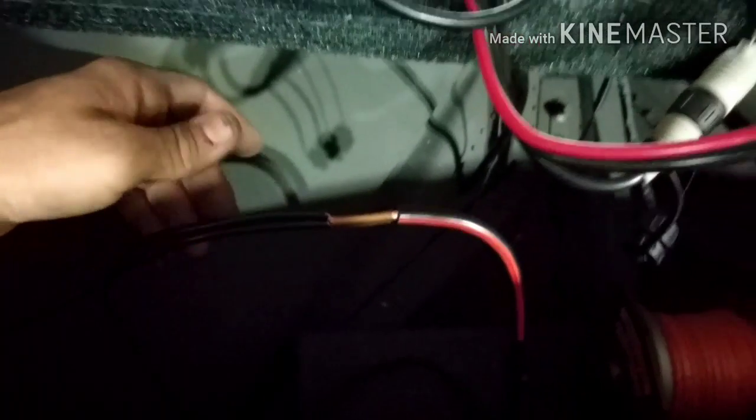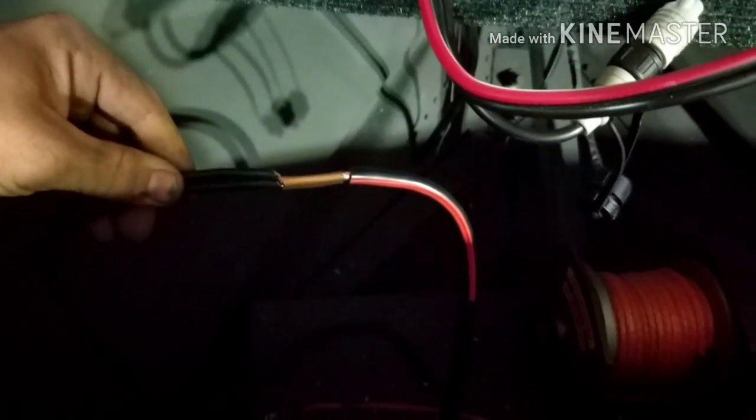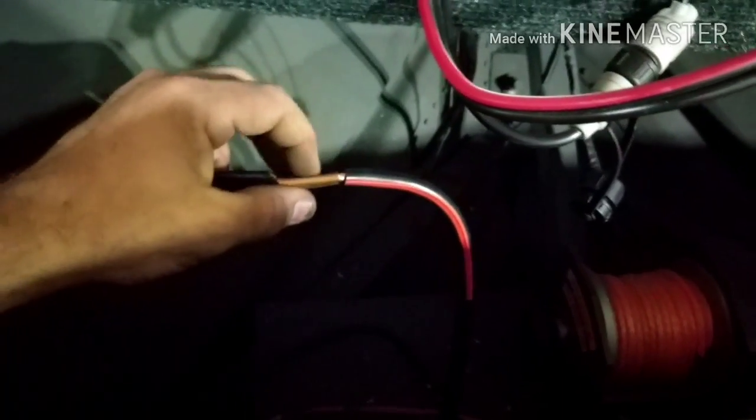So helpful hint number two here with a little bit of a grainy video. I'm hooking up my negatives, and these are some pretty thick wires. They sell connectors and they're usually like three to four bucks a piece if you buy them for splicing together thicker wires.